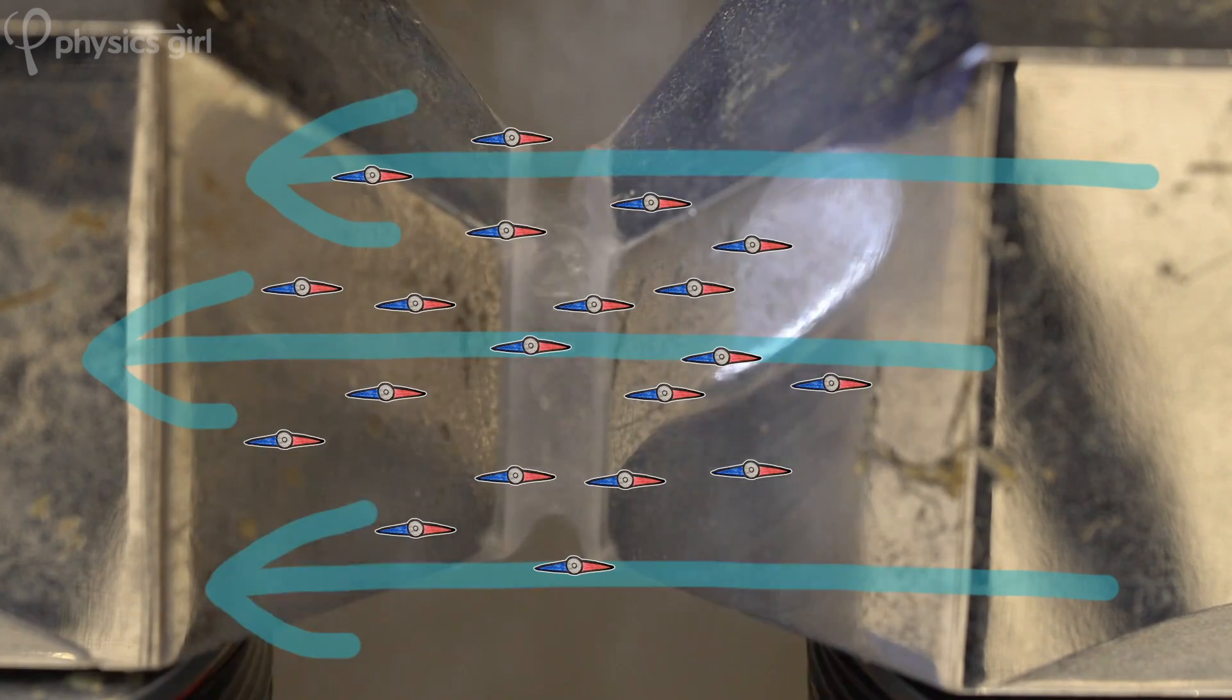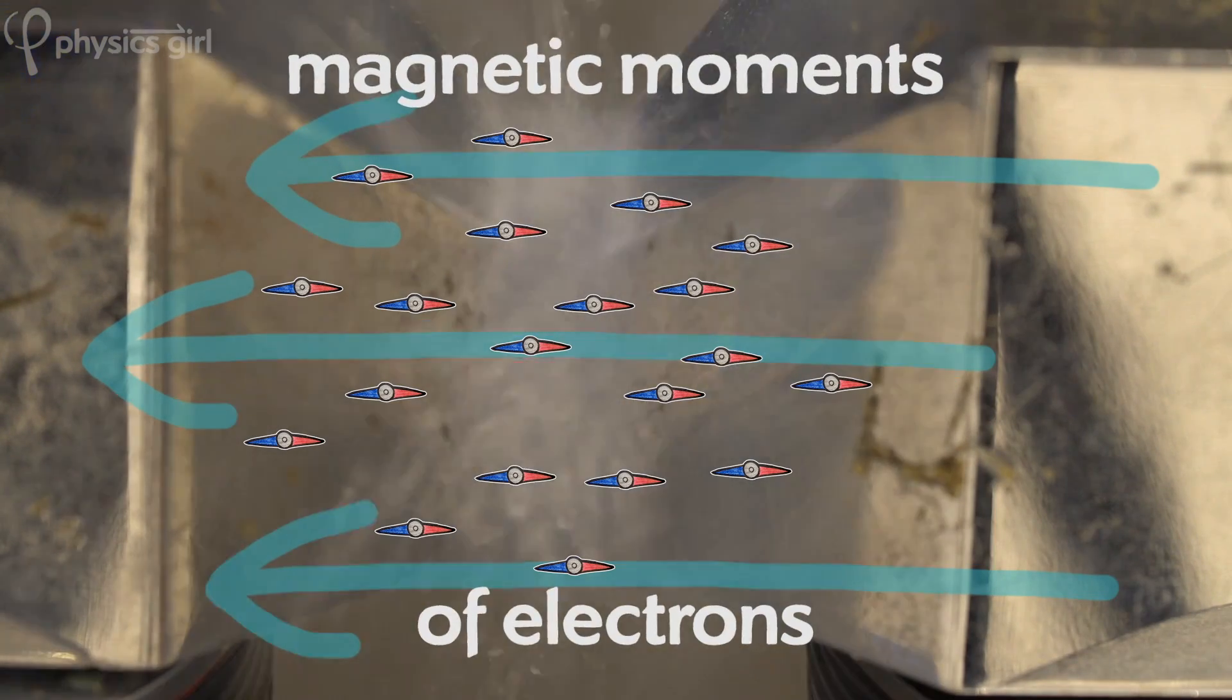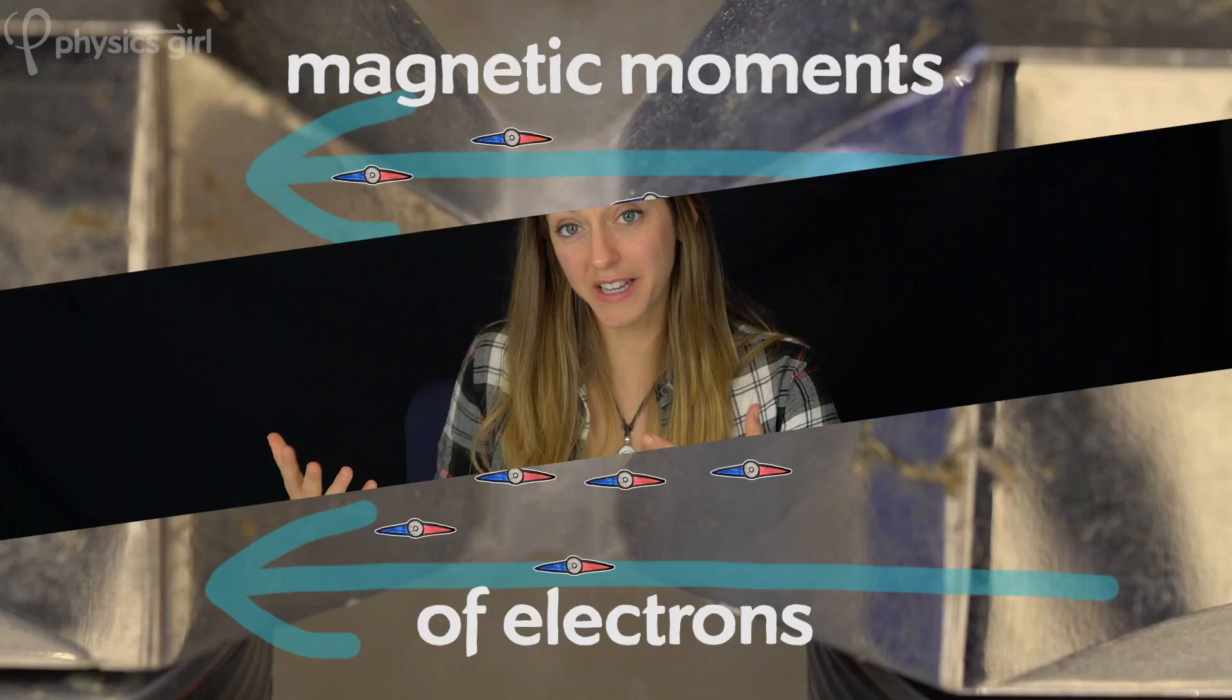These mini magnets I'm talking about are basically the little magnetic moments of the electrons in the oxygen's atoms. You can really think of a magnet being made up of tiny, tiny, tiny, tiny little magnets all aligned in the same direction.